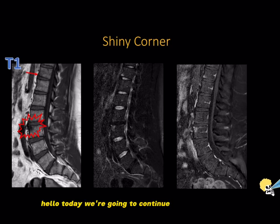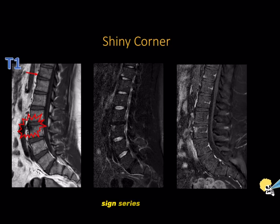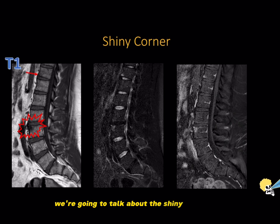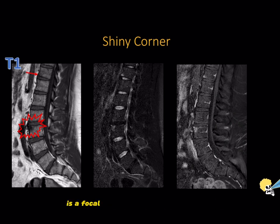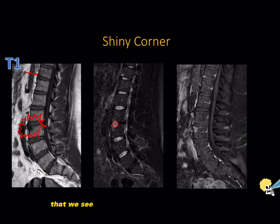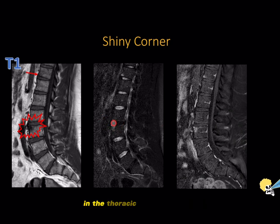Hello, today we're going to continue our MSK radiology science series and today we're going to talk about the shiny corner sign. The shiny corner sign is a focal abnormality in signal intensity that we see at the corner of the vertebral bodies in the thoracic or lumbar spine.